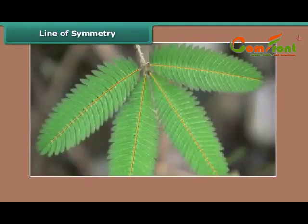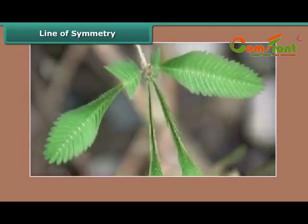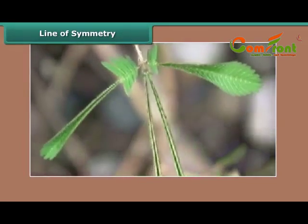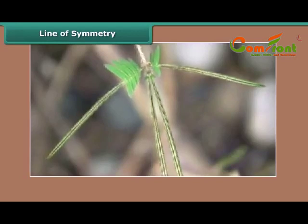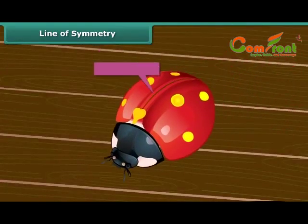Look at the touch-me-not plant leaves. When you touch them, they fold in halves. Can you see the two halves matching each other? This particular line created by folding of the leaves is called the line of symmetry. This bug also has a line of symmetry along which it folds into two identical halves.